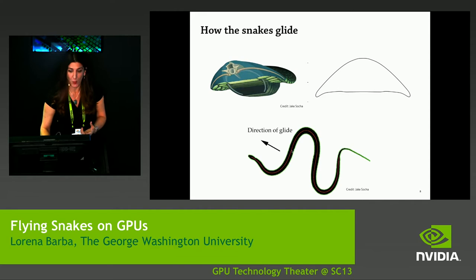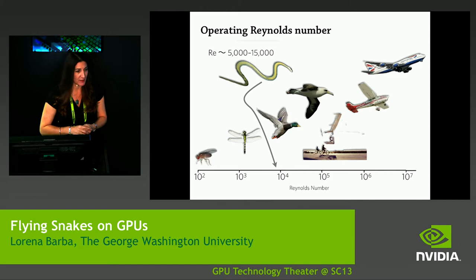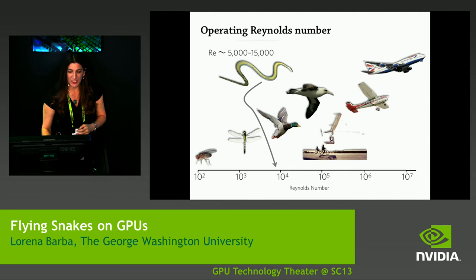The snakes operate in a very interesting Reynolds number, which is a number we use in aerodynamics to identify the operating range of different flyers. They're between birds and insects in that sense, and so the physics of the flow is very special. A couple of things that are important in this study: lift and wakes.